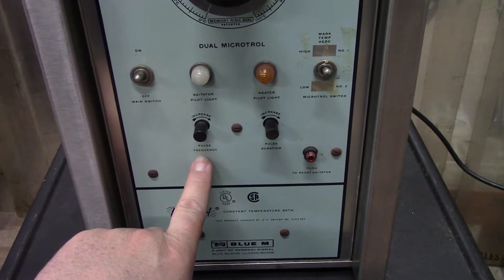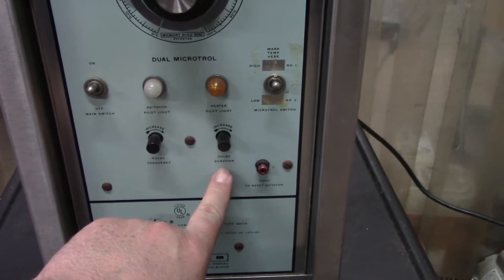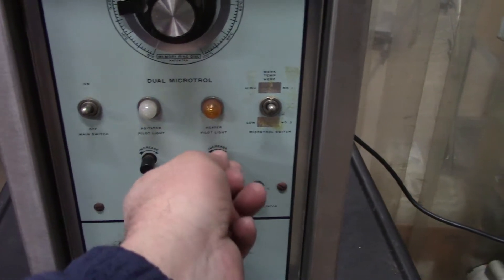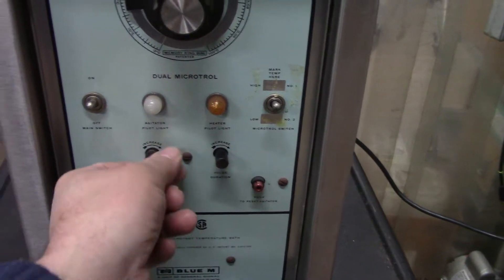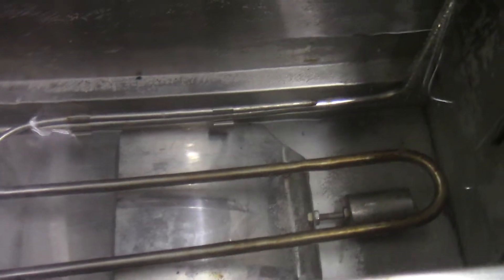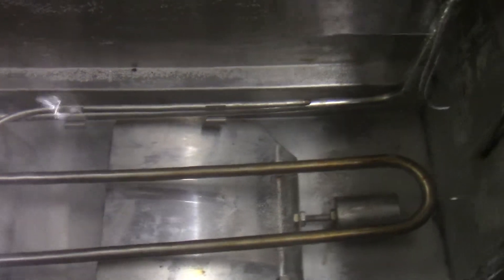This decreases the frequency of the pulse, and this is the duration of the pulse, which can be increased or decreased. Again, it's supposed to be a very light pulsing to move the water around to get a constant temperature.